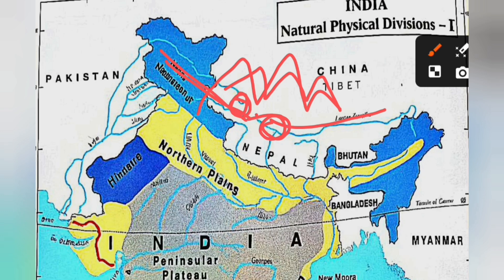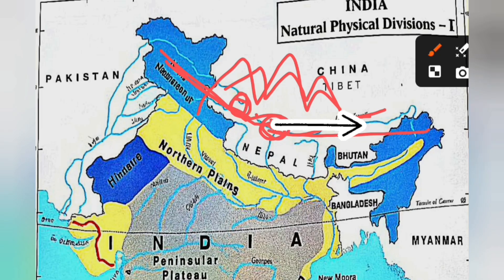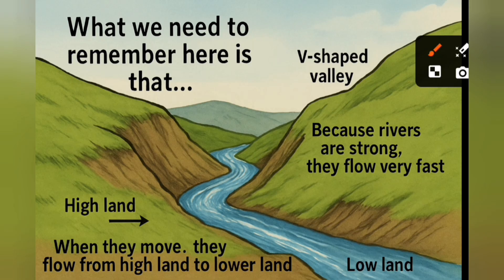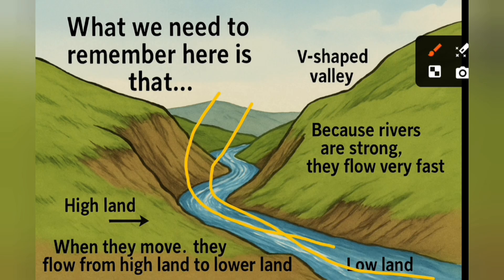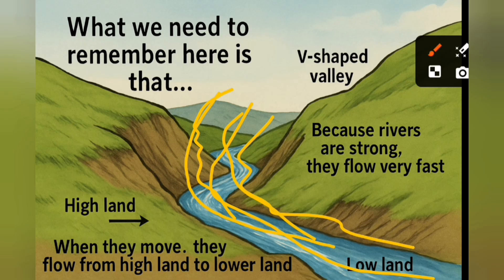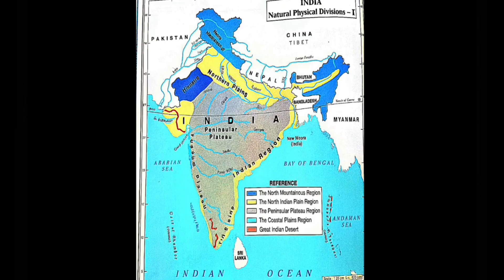For example, the Indus river flows towards the northwest and the Brahmaputra river flows towards the east. When rivers flow downhill, they are strong and flow very fast — that is why rivers form V-shaped valleys. Now let us discuss about Himalayan rivers.